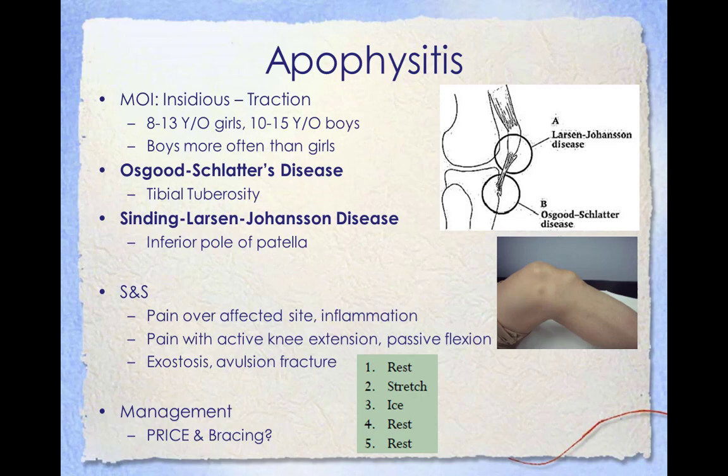Osgood-Schlatter's disease is a traction injury which occurs when the patella tendon pulls away from the tibial tuberosity. Sinding-Larsen-Johansson disease is a traction injury which occurs when the patella ligament pulls on the inferior pole of the patella. Signs and symptoms of apophysitis include pain over the affected site, inflammation, pain with active knee extension and passive flexion, exostosis (a bony outgrowth), or an avulsion fracture where the tendon pulls a chunk of bone off. Management includes PRICE and possibly bracing to support the patella tendon; if an avulsion fracture has occurred, surgical intervention may be necessary.